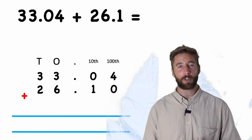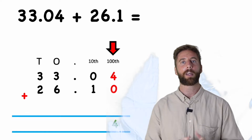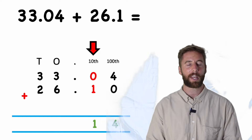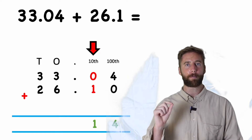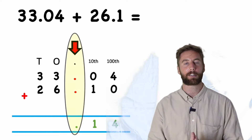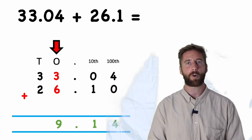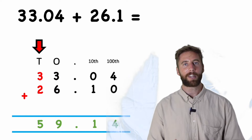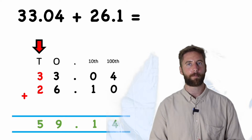I'm going to start with my smallest value, which is now hundredths. So four plus zero is four — I have four hundredths. Now I'm ready to do my tenths: zero tenths add one tenth equals one tenth. Really important — I put my decimal point in. I can see they're all still in line, which is a great sign. Then I do my ones: three ones add six ones equals nine ones. And last but not least, my tens: three tens add two tens equals five tens. Leaving me with an answer of fifty-nine point one four.